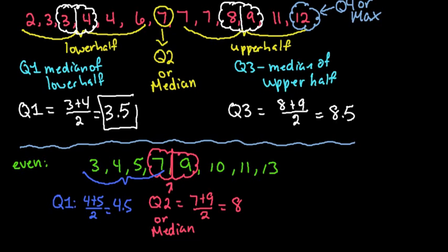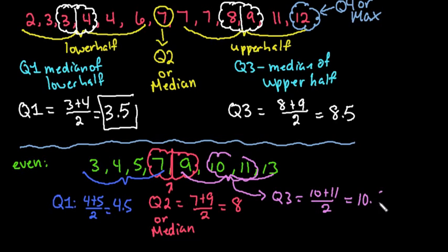And our Q3 would be the median of this part. So we would have to find the average of 10 and 11. So Q3 would be 10 plus 11 divided by 2, or 10.5. And then Q4, remember, is always the easiest one to find because that is just your max. So our Q4 is going to be 13.